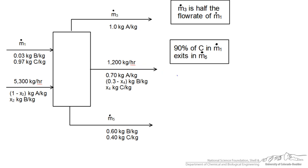So first thing we do is write our balances. And I like to personally start with an overall balance. Usually that's easiest. So we know that the mass flow rate in stream 1 plus 5300 has to equal the mass flow rate in M3 plus 1200 plus this unknown M5.